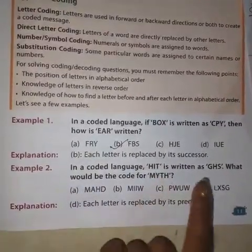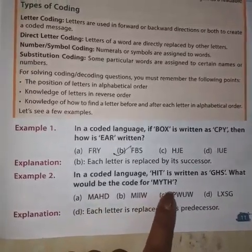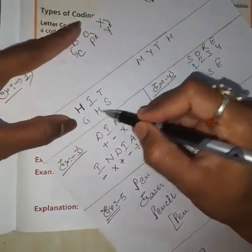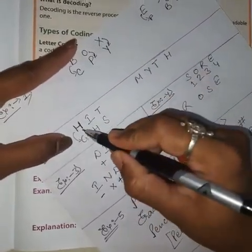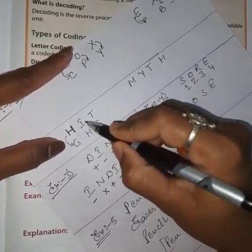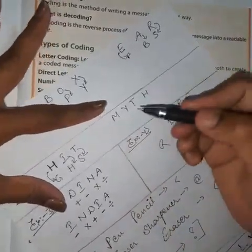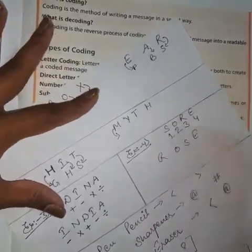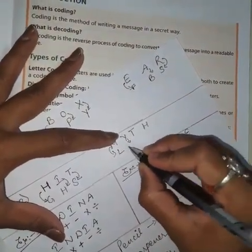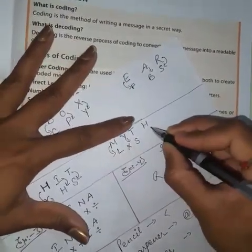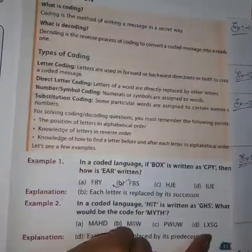Example 2: In a coded language, HIT is written as GHS. What would be the code for MYTH? What is happening here: what comes before H is G, what comes before I is H, and what comes before T is S. Applying the same rule: before M is L, before Y is X, before T is S, and before H is G. So the right option is LXSG — option D.